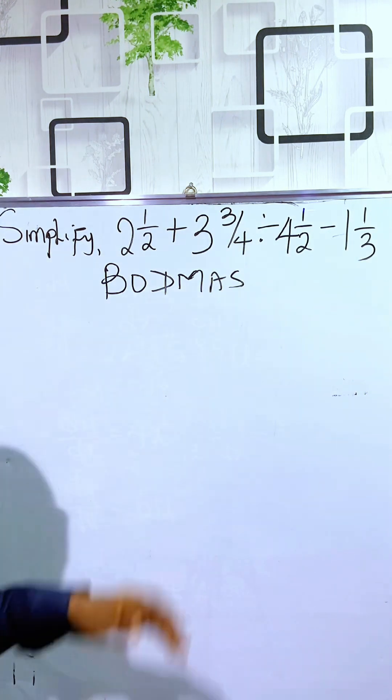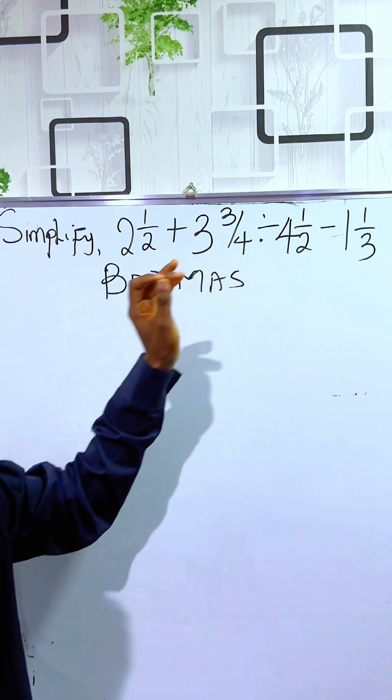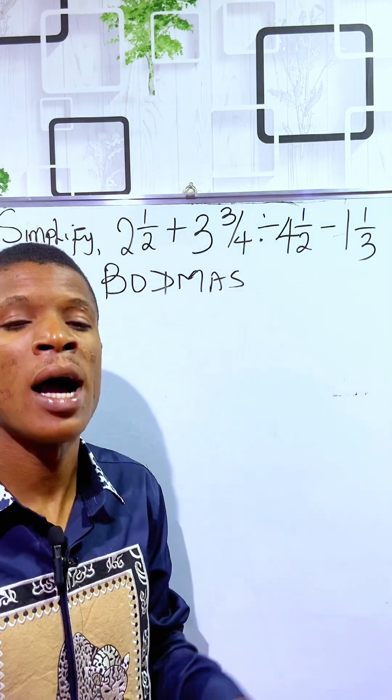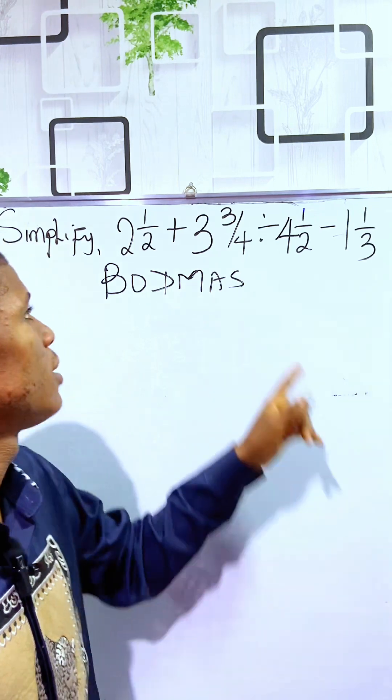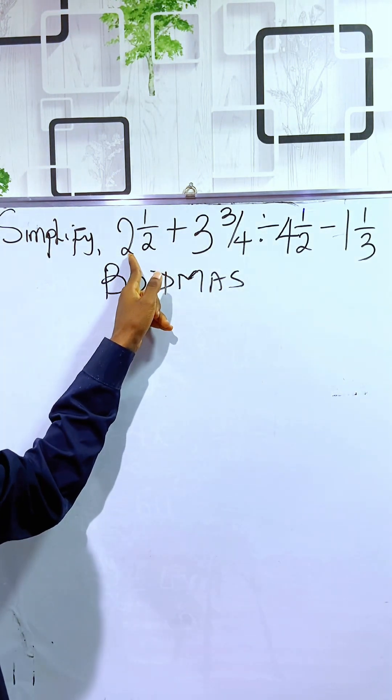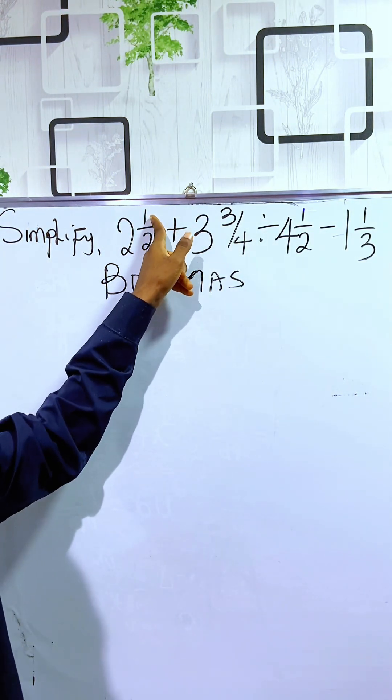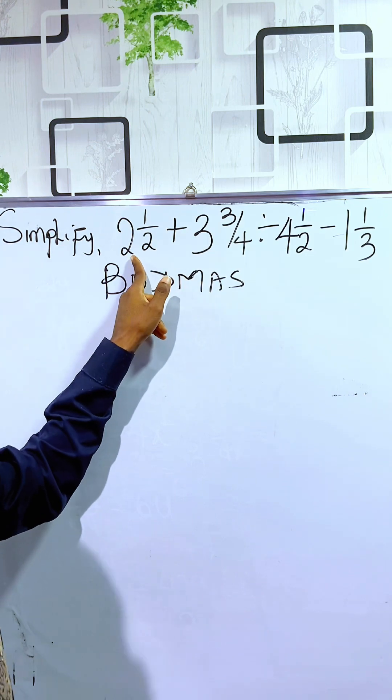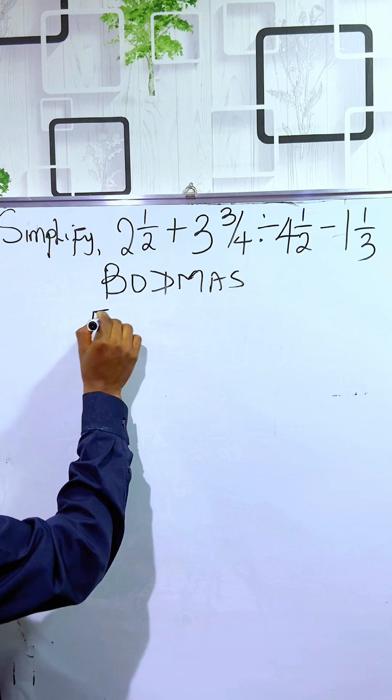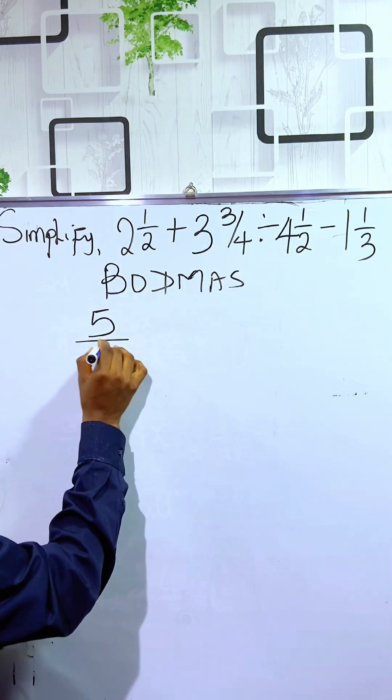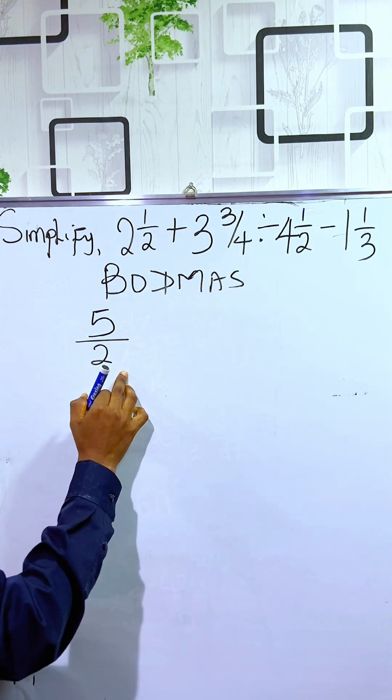First thing we are going to do in this fraction is that we have to convert this fraction to an improper form so that we can simplify. To do that, we use 2 to multiply the whole, then add the numerator. 2 times 2 is 4 plus 1 is 5. So, I have 5 over 2.